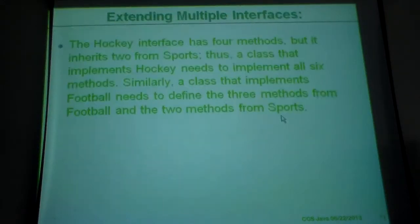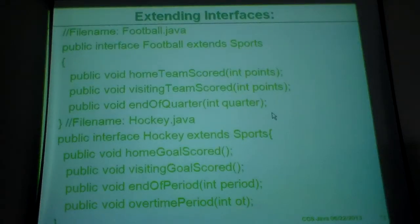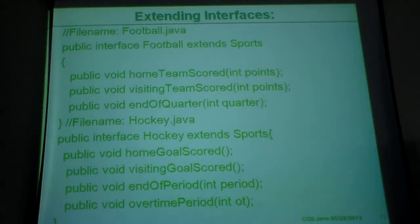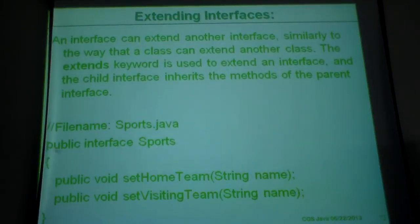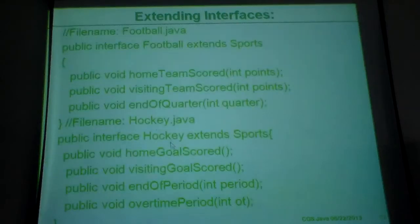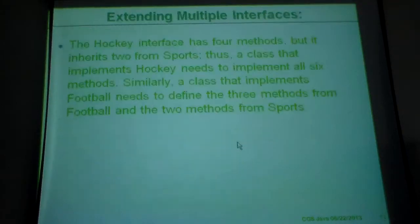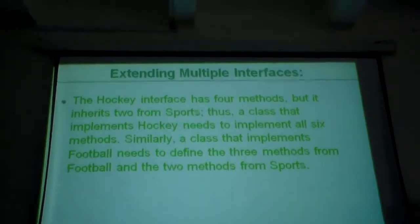This program I leave as an exercise for you to write the implementation. We have three interfaces: the first is 'sport', the second is 'football' which extends sport, and the third is 'hockey'. Now we need to implement — we need a class that implements the hockey interface, the last one.